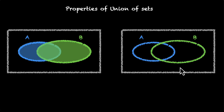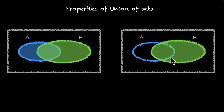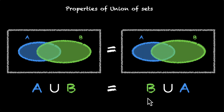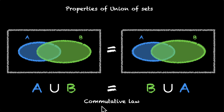But what if we started with B? We shade this region first, then add A to it, finding B union A. Notice that both have the same shaded region. We can say A union B is the same as B union A. This is called the commutative law.